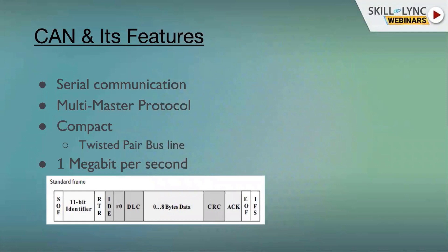There are many serial communications available in the market, such as I2C, SPI, and UART. All of these are master-slave oriented protocols, but CAN is a multi-master protocol. We will explore the concept of multi-master further shortly.